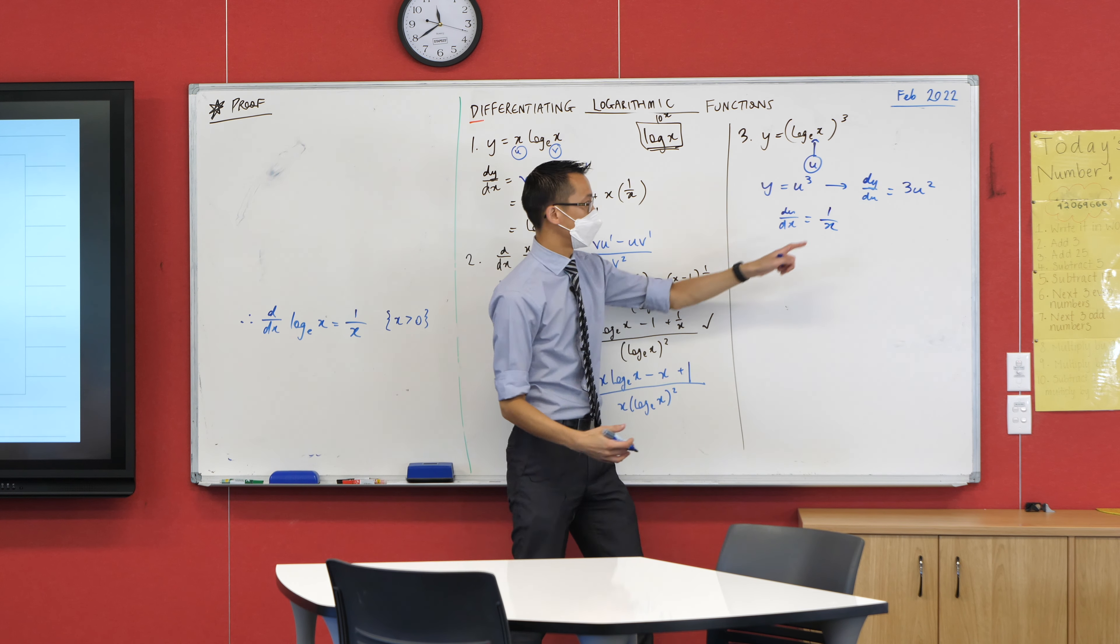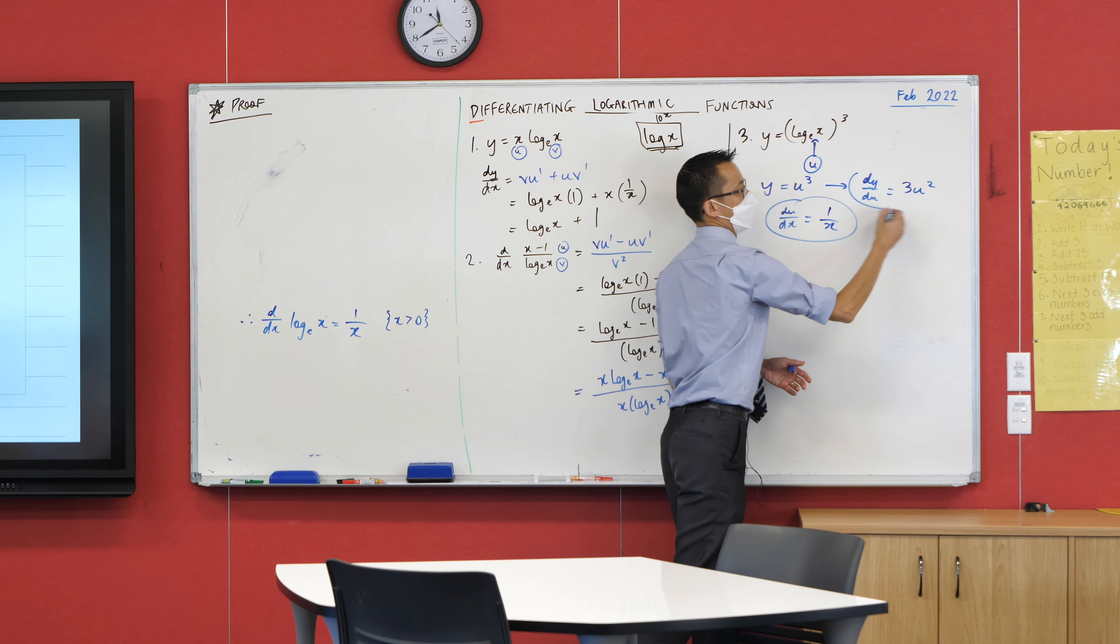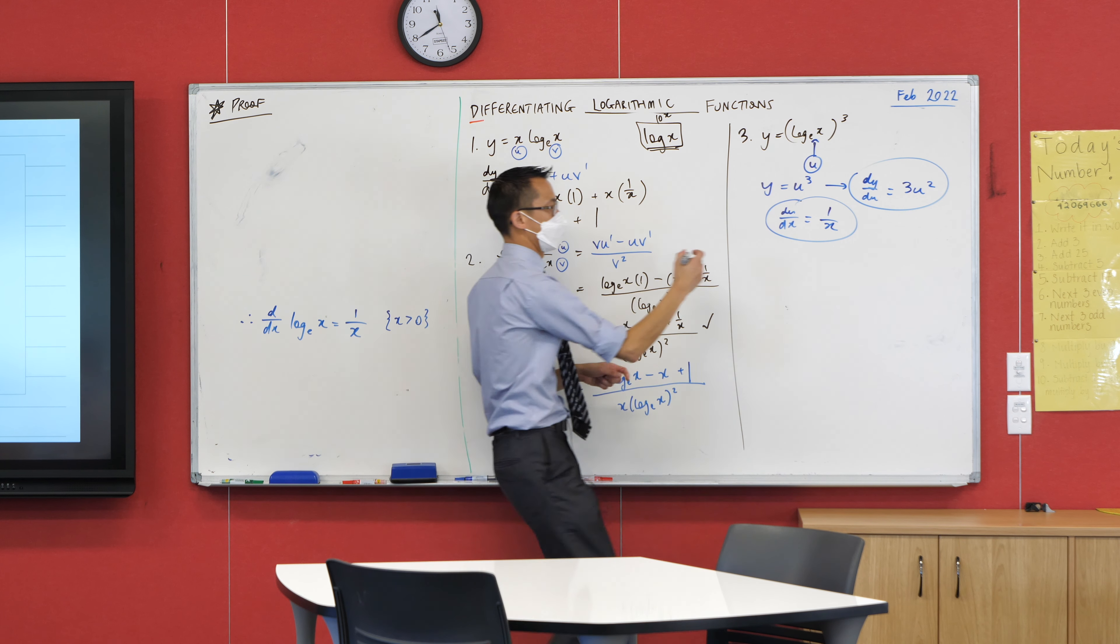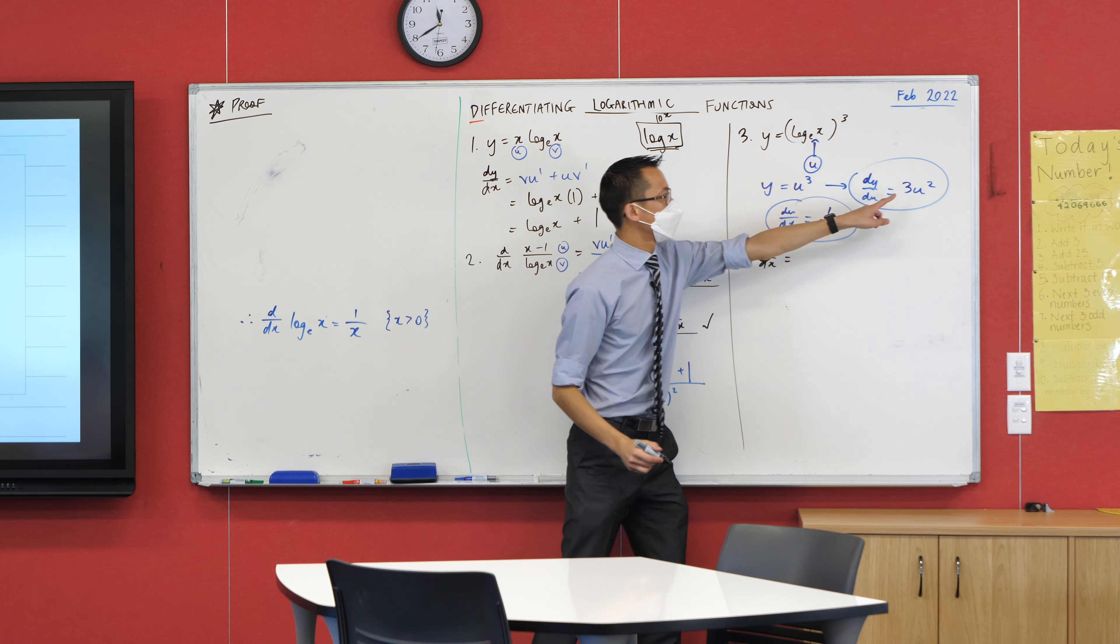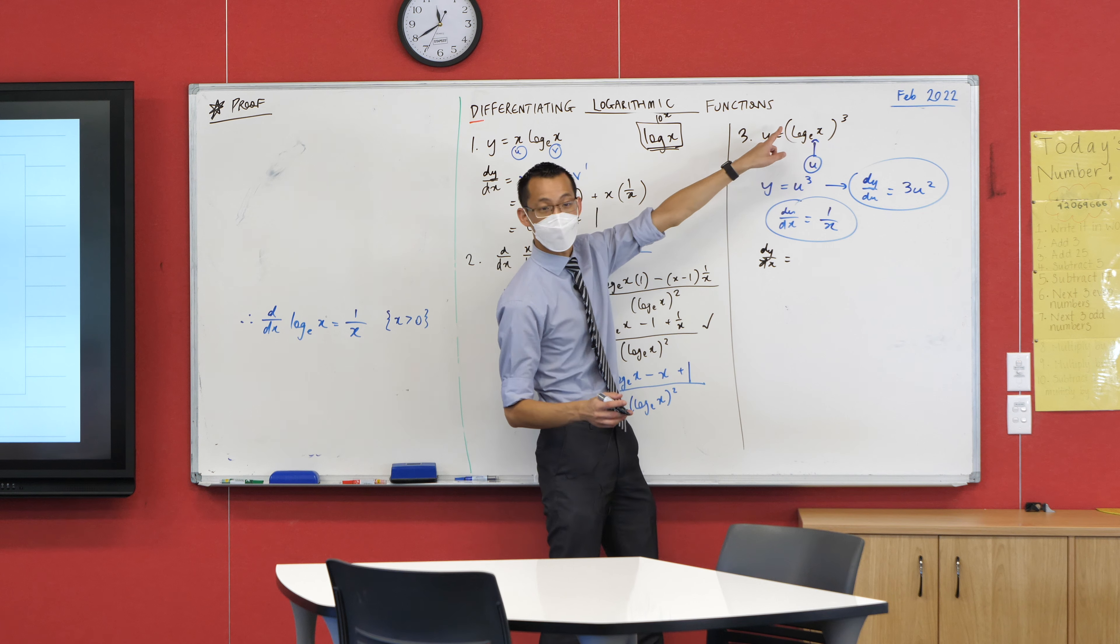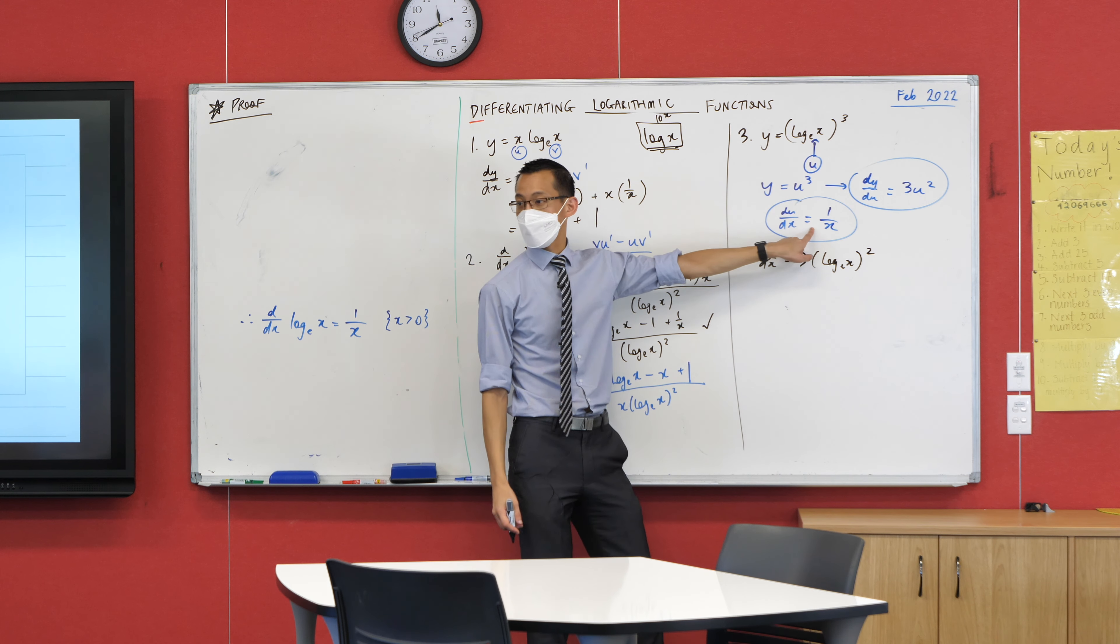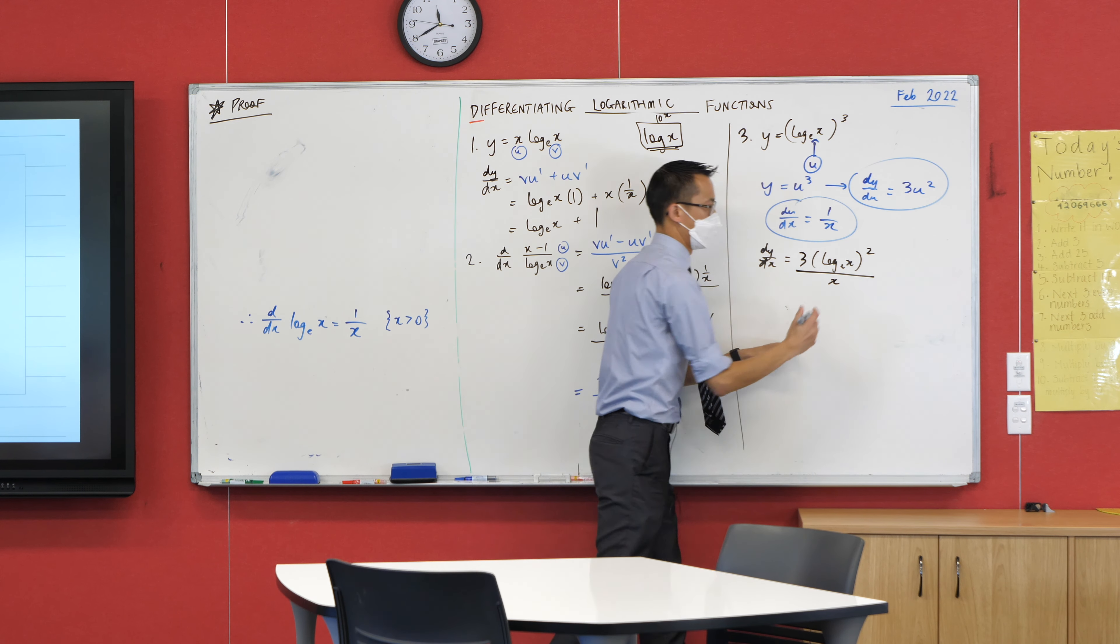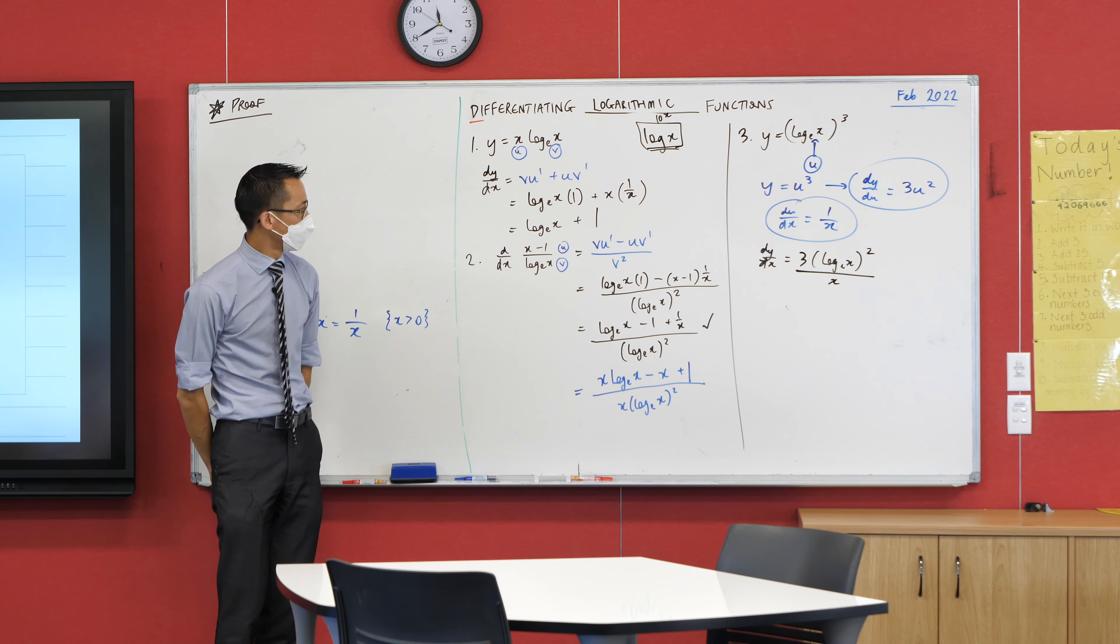To get the full derivative, DY on DX, I just need to chain these two together. This one and this one. So here we go, DY on DX equals, I'll write down this one first and instead of U, I'll write it just the way it was before. So it was three log X squared. And then I'm multiplying by this. I could write times one over X right at the end, but I'm just going to go in one hit because I can finish right there. Does that make sense?